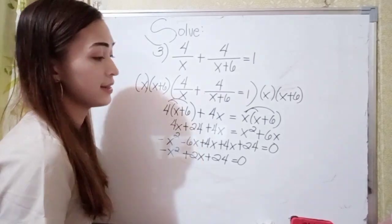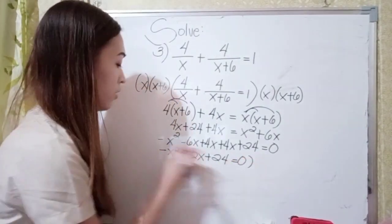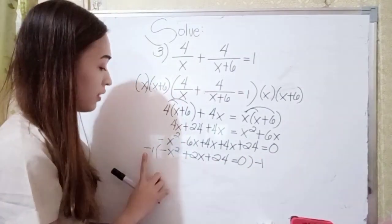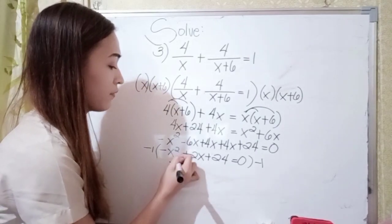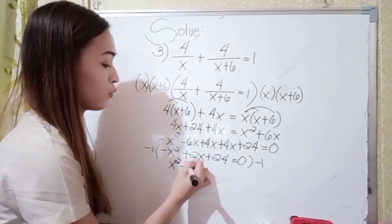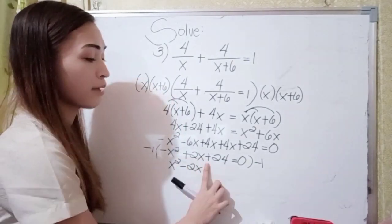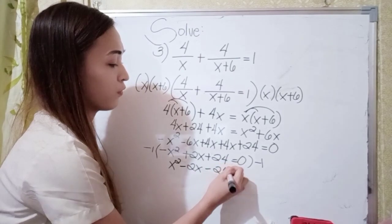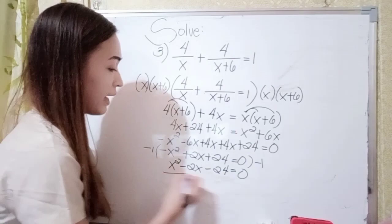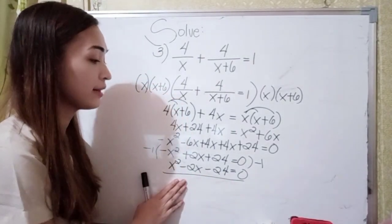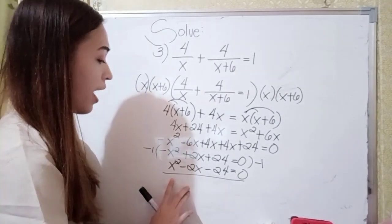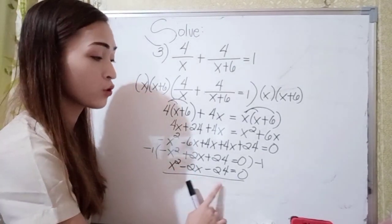To make the leading term positive, multiply both sides by negative 1. Negative 1 times negative x squared becomes positive x squared. Negative 1 times positive 2x becomes negative 2x. Negative 1 times positive 24 becomes negative 24, equals 0. So our equation is x squared minus 2x minus 24 equal to 0.